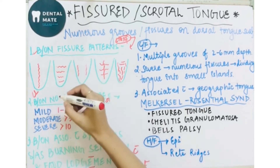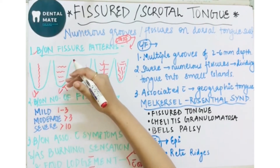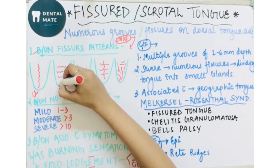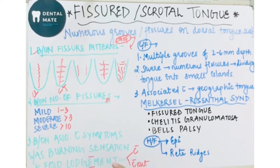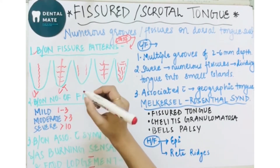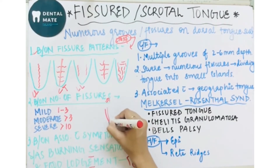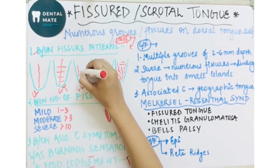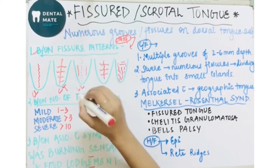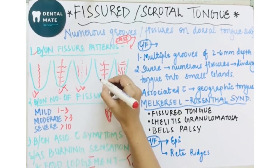The third type is lateral transverse. The fourth is lateral longitudinal — unlike central longitudinal where the line runs from the center, in lateral longitudinal the fissures run lateral to the midline. If this is the midline of the tongue, the fissures are running laterally. The fifth type is the branching pattern — here transverse fissures extend from the central fissure.